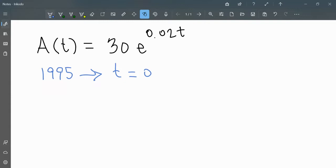So to find the population of the city in 1995, we evaluate the function at t equals 0. In the exponent, 0.02 times 0 is 0, and anything to the 0 power is 1. So the population in 1995 was 30,000.